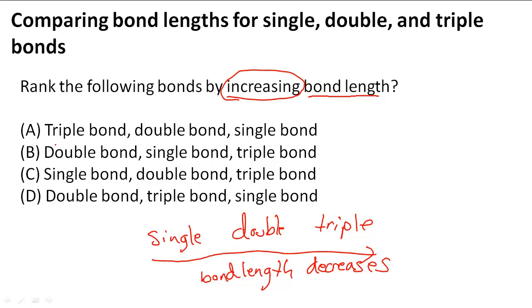The only one that starts with a triple is A. B starts with double which we know is not the smallest, then single which we know is the longest, and double again. So B, C, and D are wrong, and A is the answer because it goes from triple to double bond to single bond.